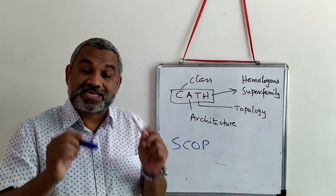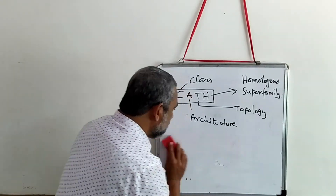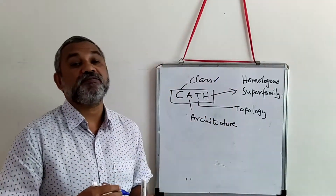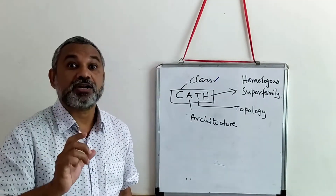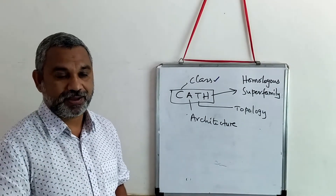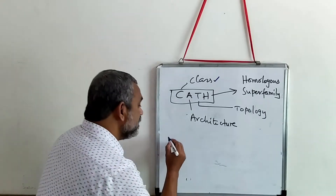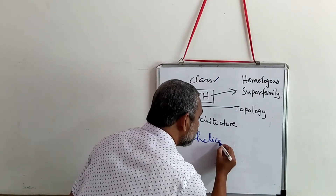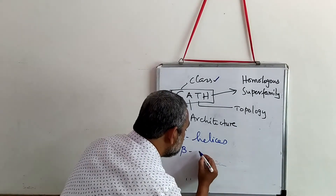In CATH, the first level is the Class. In the Class, we are going to discuss the structure of a protein — especially the secondary structure. Therefore, in Class you will find four different types. The first type is exclusively for alpha helices. The second category is exclusively for beta sheets. In the third category you will find a mixture of alpha helices and beta sheets.